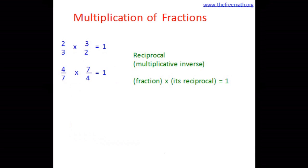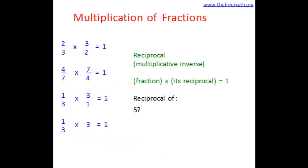So what we see is that when a fraction is multiplied by its reciprocal, the answer is 1. That means if I have two fractions and their product is 1, those two fractions are reciprocals or multiplicative inverses of each other. For example, 1 over 3 and 3 over 1 — their product is 1, and since 3 over 1 equals 3, that means 1 over 3 and 3 are reciprocals of each other.